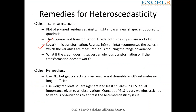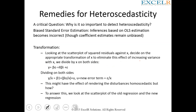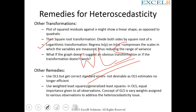Yes, absolutely — there are other ways of dealing with heteroscedasticity. Instead of using OLS, ordinary least squares, you can use weighted least squares, or WLS. If there is heteroscedasticity in the data, your coefficient estimates calculated based on OLS would give you a wrong indication. Hence, instead of going with OLS, go with WLS — weighted least squares.